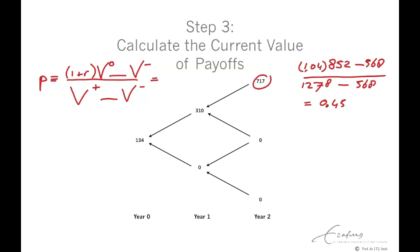Stepping back through future payoffs, we can calculate the option value of this conditional claim. So, 45% times 717, plus 55% times zero, divided by 1 plus the interest rate results in a value of 310.